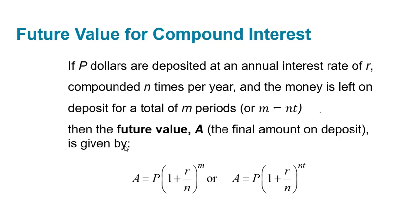So now let's talk about how we actually calculate the future value of compound interest. There is a formula. If P dollars are deposited at an annual interest rate of r compounded n times per year, and the money is left on deposit for a total of m periods, or another way of thinking about it is you can get m by calculating the number of times a year times the number of years. So m equals n times t. Then the future value A, the final amount on deposit, is given by A equals P times (1 plus r over n) to the m. Or instead of using that extra variable m, you could alternatively use A equals P times (1 plus r over n) to the power of n times t. That's actually the version I prefer, but you can use whichever one you like.